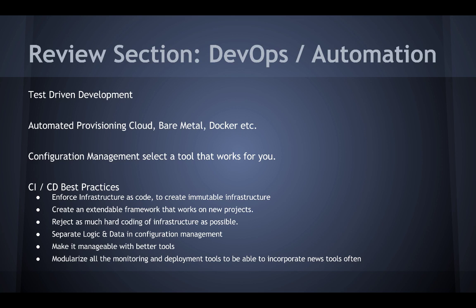Use the following CI/CD best practices: enforce infrastructure as code to create immutable infrastructure; create an extendable framework that works on new projects; reject as much hard coding of infrastructure as possible; separate logic and data in configuration management components; make it manageable with better tools; and modularize all the monitoring and deployment tools to be able to incorporate new tools often.